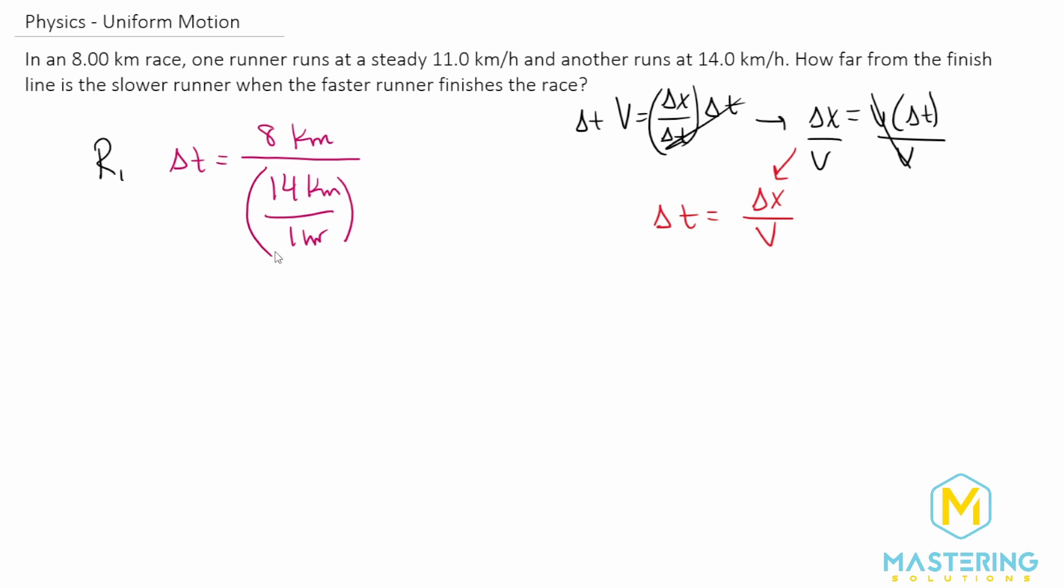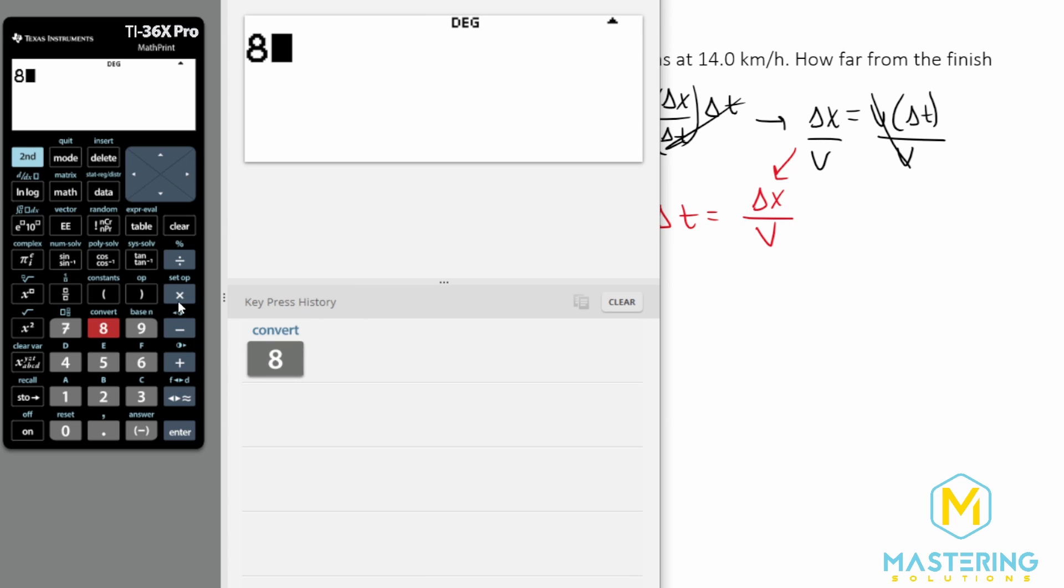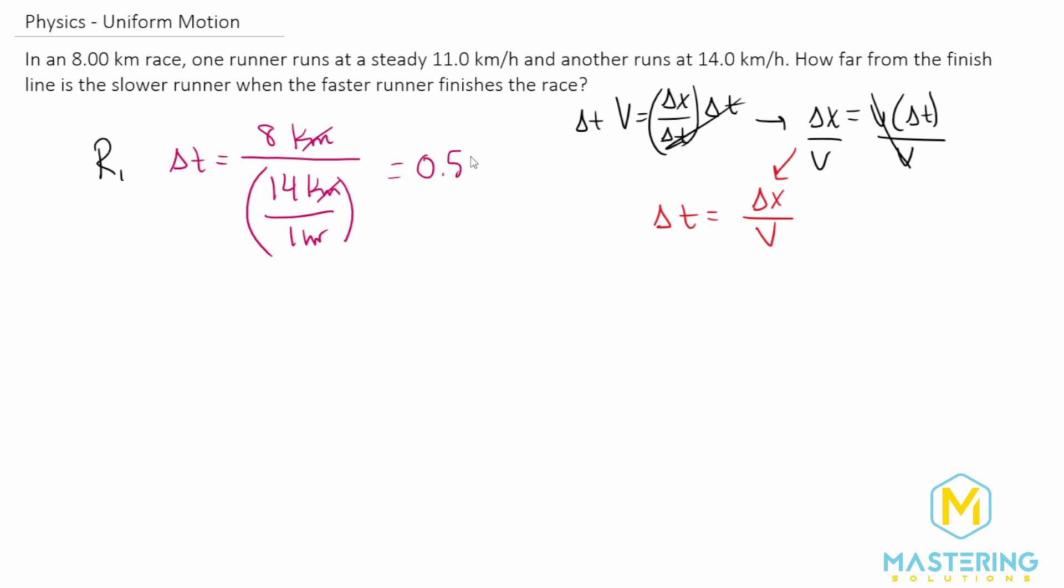We've talked about this in previous problems, but I write it like this so that you can easily see that when we multiply by the reciprocal, because we're dividing by a fraction, the kilometers will cancel out, leaving us in hours. So we know we did our math correctly. So eight kilometers divided by 14 kilometers per hour gives us 0.571 hours.